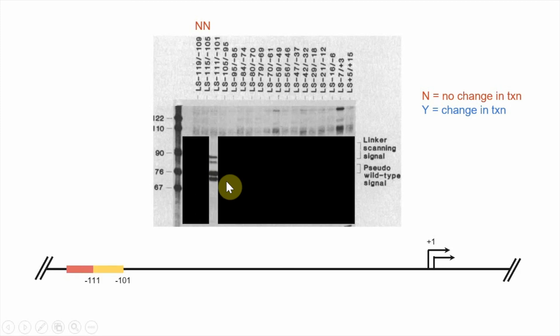Between minus 111 and minus 101, we do see diminished transcription here. This is about maybe five-fold stronger than this one. So there is a change in transcription, which implies that there is some sort of promoter element here that is important for fully activated transcription. Is it a required element for transcription? No, because we still get some level of transcription without this promoter sequence.